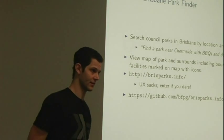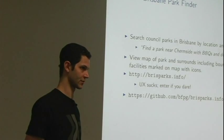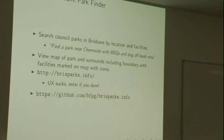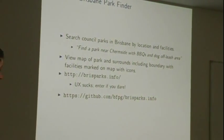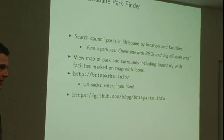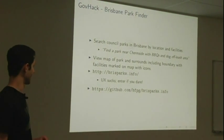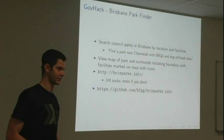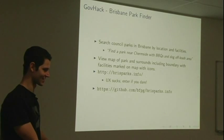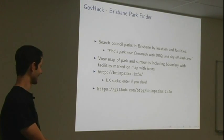But in the end, we decided on Brisbane Park Finder. The idea was to search council parks in Brisbane based on their locality and the facilities available at the park. An example search: find me a park in Chermside with a dog off-leash area and some barbecues. That would return a list of candidate parks. You could then view a map of the park and the surrounding district, and see the different facilities in the park marked on the map with icons. It lives at brisparks.info, but enter if you dare because the UX is terrible, although it has been improved slightly since GovHack. The code lives at GitHub.